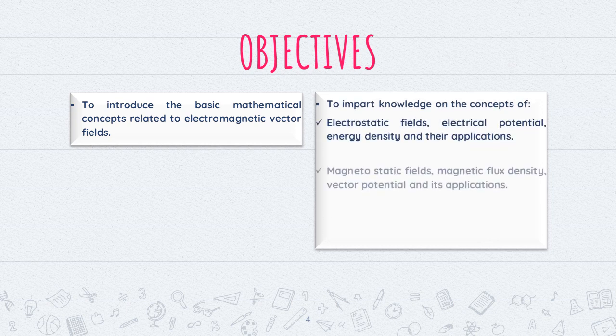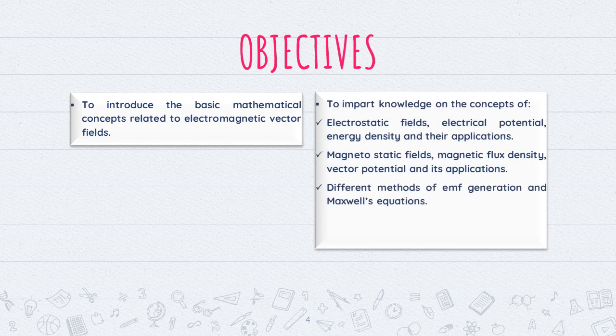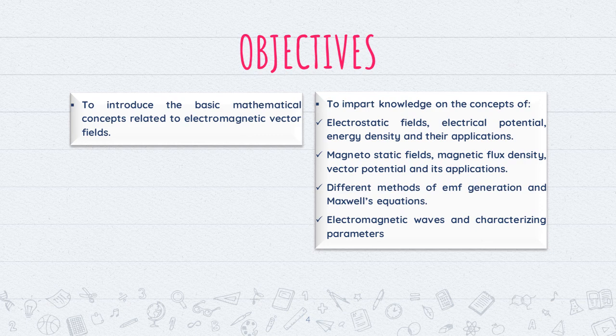The second objective is to impart knowledge on the concepts of Electrostatic Fields, Electric Potential, energy density and their applications. The electric field and the magnetic field combined together make up the entire subject of Electromagnetic Theory. We are going to study Electrostatic Fields as well as Magnetostatic Fields, and apart from this, we are going to study Maxwell's equation.